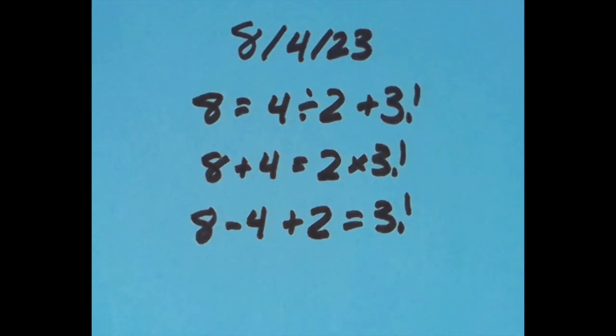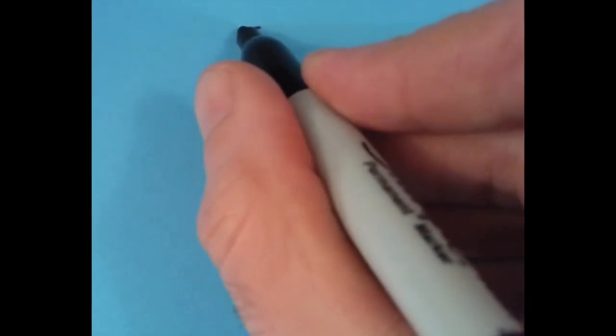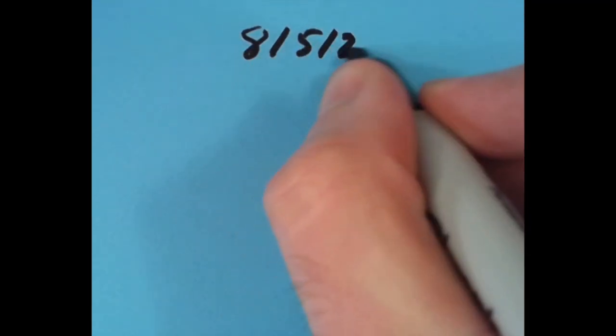Now tomorrow is going to be August 5th, so we can write the date as 8-5-23. So go ahead and see if you can come up with an equation for the digits in this date. I'll do the same thing and share my results in a new video tomorrow.